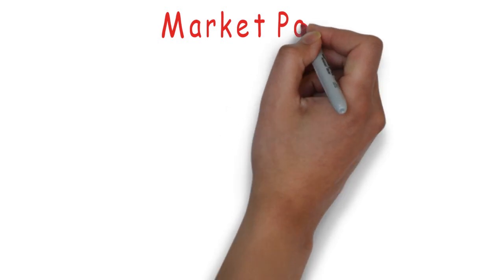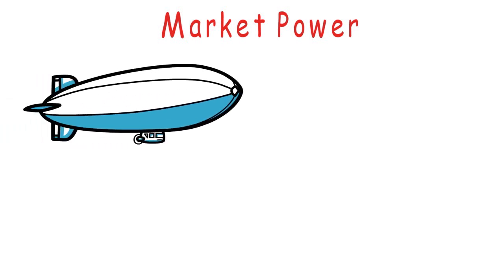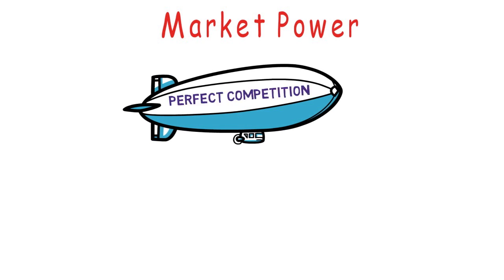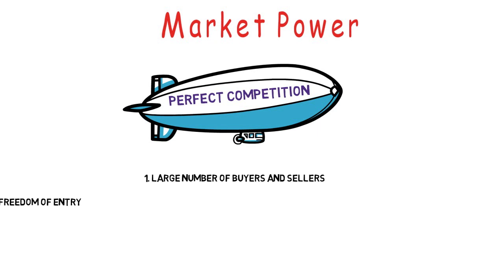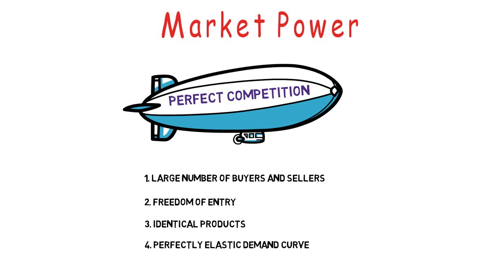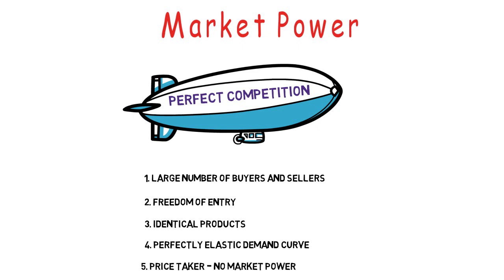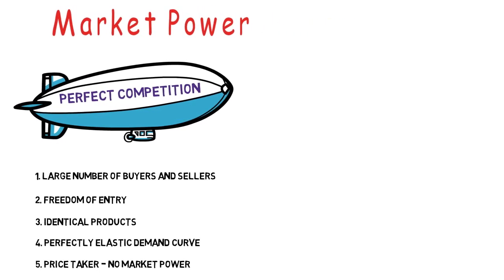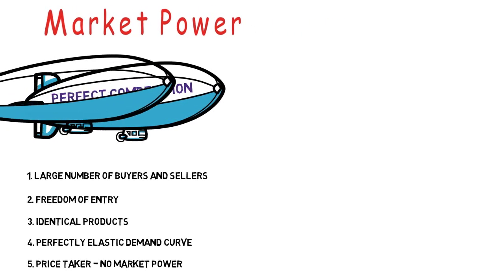Market power to a large degree determines the type of market structure your firm is operating in. Looking at one extreme — perfect competition — we see firms that operate in very large markets where there are many buyers and sellers. These are pretty basic products like agricultural goods, where freedom of entry is very easy. They produce identical products with no branding, making the demand curve perfectly elastic. There is no ability to raise price, making that firm a price taker with no market power.